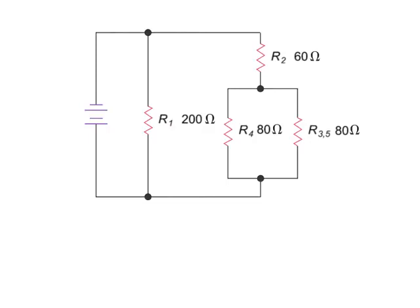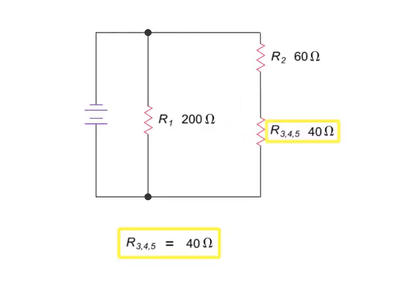Now, the R4 resistor and the equivalent resistance of the R3 and R5 resistors are in parallel. Their combined resistance can be calculated by dividing their product by their sum. Thus, using the product over sum equation, we have 80 times 80 equals 6400 divided by 80 plus 80, which is 160, giving 40 ohms.